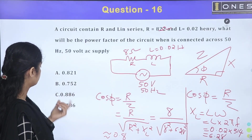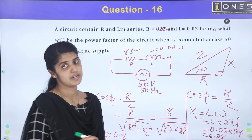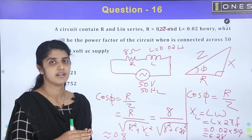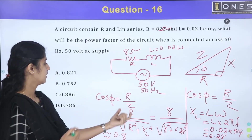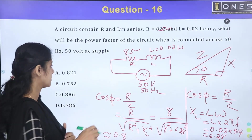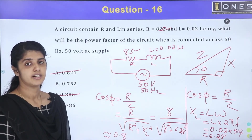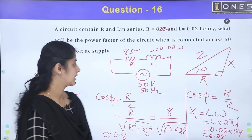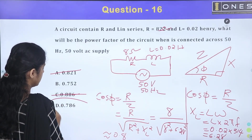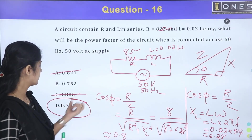Looking at the options: 0.821, 0.752, 0.886, 0.786. Since we approximated 6.28 as 6, we have a slightly lower denominator. Doing the exact calculation with 6.28 and dividing, the answer is 0.786. We can eliminate the other options, and the correct answer is 0.786.